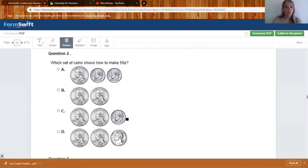Number two. Which set of coins shows how to make 55 cents? Well, if we were to add A, we know we have 25 cents, 35 cents, 45 cents. That would not make 55 cents. Well, if we were to add A, we know we have 25 cents. That's not correct either. 25 and 25 is 50 plus 10 is 60. That wouldn't be right either. Let's check this last one. 25 plus 25 plus five. Does that make 55? You should have marked D.